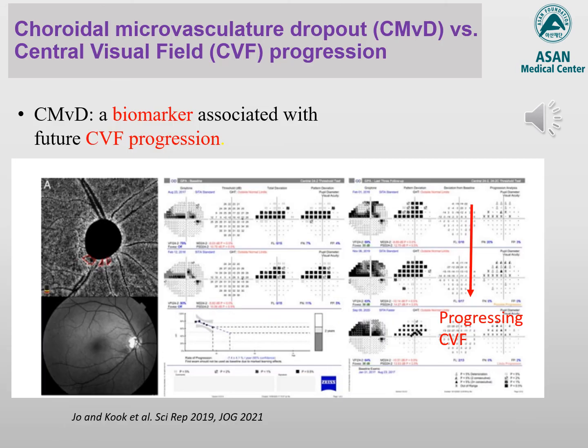By imaging the deep layer optic nerve head using OCT angiography, we can detect choroidal microvasculature dropout as shown by the red circles in this slide. Glaucoma eyes with choroidal microvasculature dropout are at a greater risk of experiencing future central visual field deterioration compared to those eyes without choroidal microvasculature dropout, as shown in these serial visual field tests. This finding suggests that choroidal microvasculature dropout may have a role as a negative prognostic biomarker for future central visual field progression.